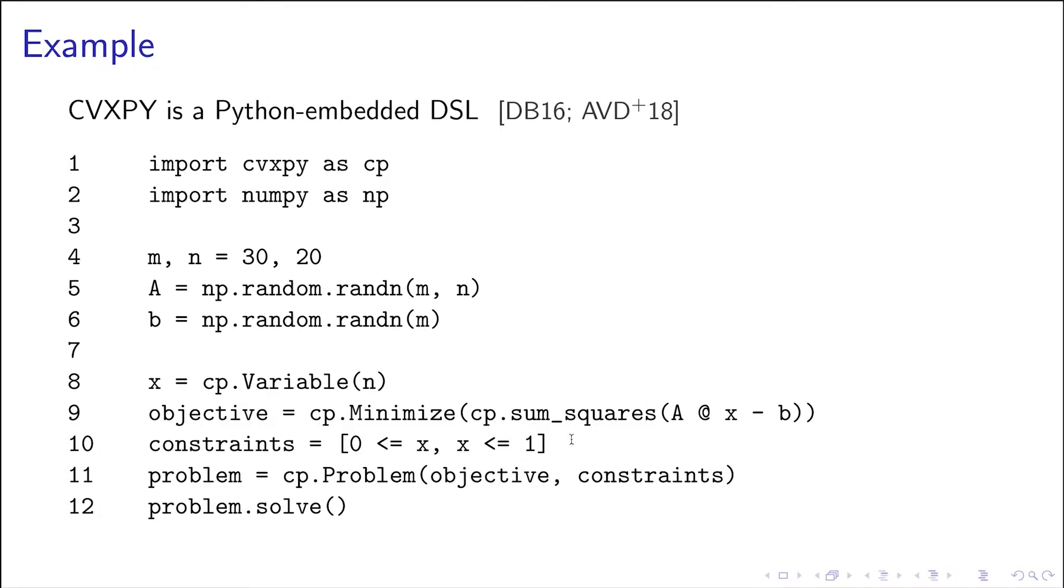So then sum_squares is a library function—we call it an atomic function—which you are allowed to use in these CVXPy problems. You're limited to the atomic functions when you construct a problem. You can't define your own functions, and there are important reasons for that, but I won't get into details.